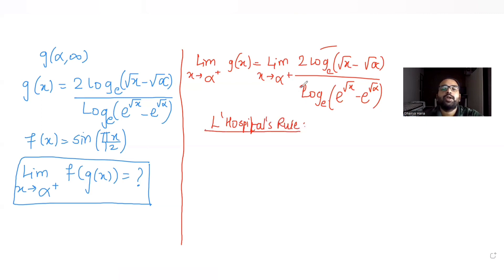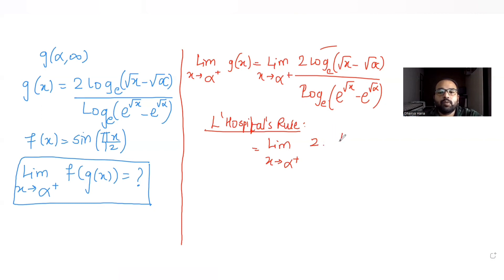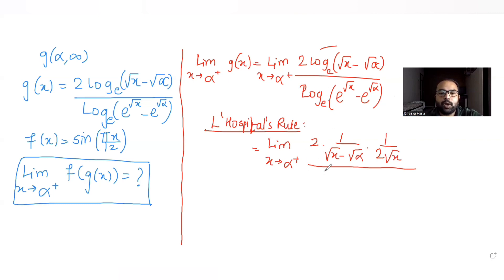Applying L'Hôpital's rule means we find the separate derivatives of the numerator and denominator, then substitute the limit value. In the numerator, the derivative of log(√x − √α) becomes 1/(√x − √α) times the derivative of (√x − √α), which is 1/(2√x). In the denominator, the derivative of log(e^(√x) − e^(√α)) becomes 1/(e^(√x) − e^(√α)) times e^(√x) times 1/(2√x).